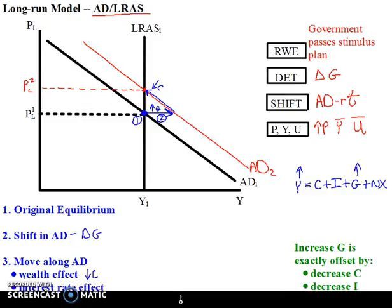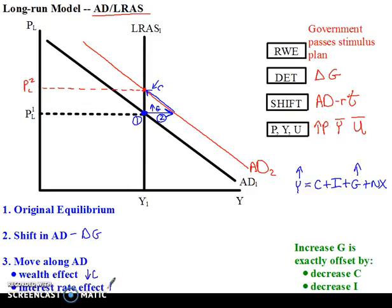The second thing is the interest rate effect. As prices go up, I have to use more of my income to buy normal goods and services, which means I can't save as much, interest rates rise, and investment falls. So through the interest rate effect, as prices go up, investment declines.